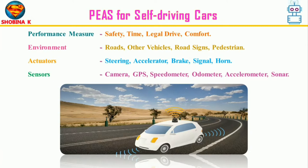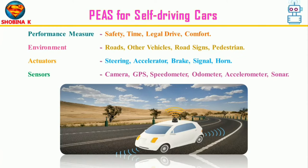Consider designing an automated taxi. For a self-driving car, the performance measure includes safety, optimum speed, and comfortable journey. The environment includes roads and traffic conditions, ranging from city roads to highways. Actuators include the steering wheel, accelerator, and gear — the steering wheel directs the car, while accelerator and gear control speed. Sensors like cameras, GPS, and sonar systems take input from the environment.